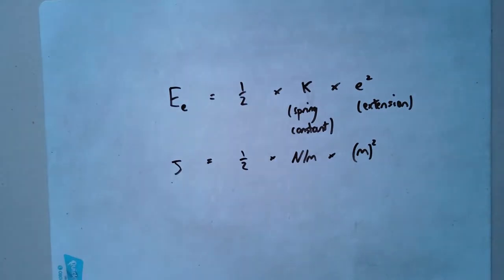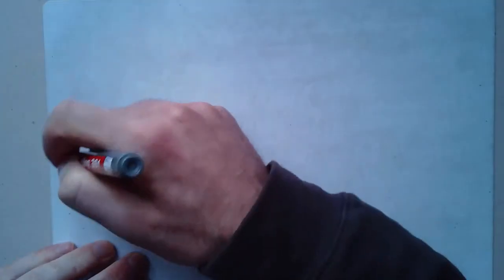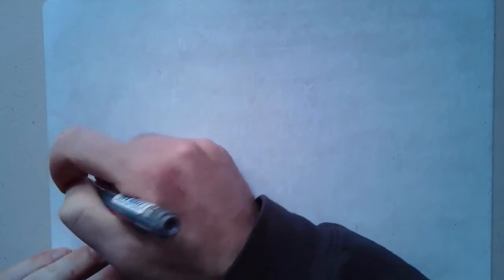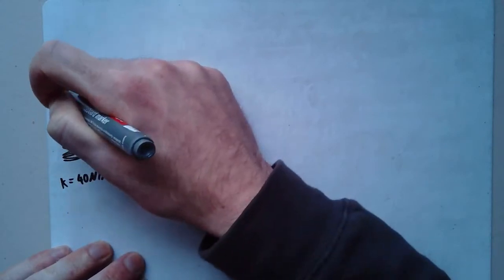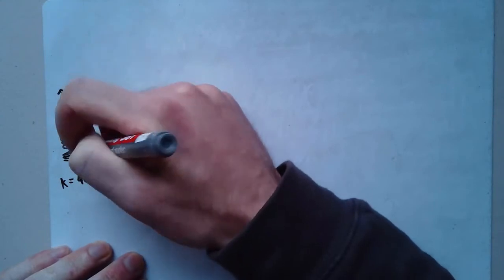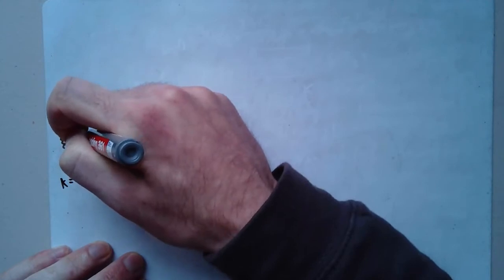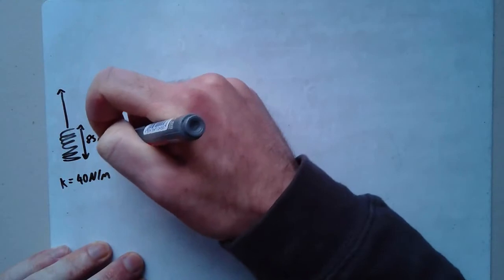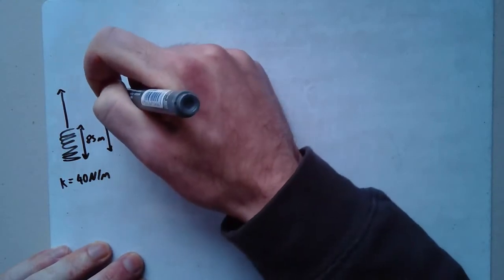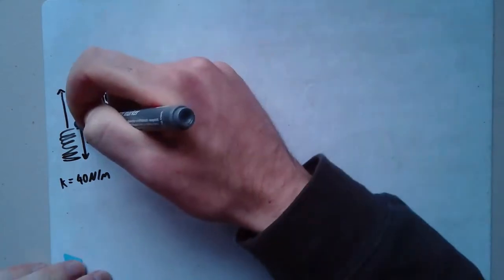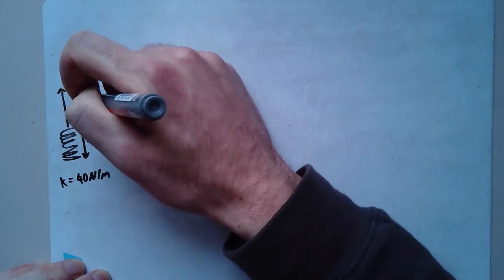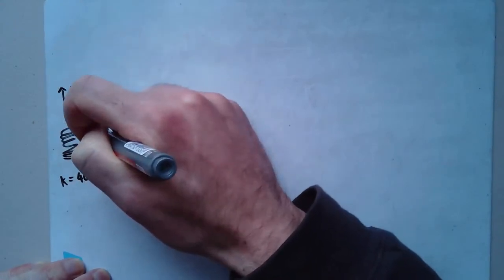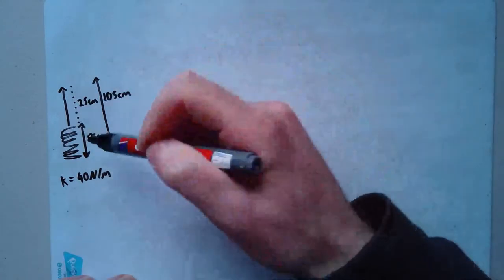Let's do some examples. So let's say I've got a spring. It's got a spring constant of, I don't know, 40 Newtons per meter. I stretch it. And its length to start with is, let's go for 85 centimeter. And its length at the end is 105 centimeter. Its extension is this distance here, which in this case is going to be the difference between 85 and 105. So 25 centimeter. Sorry, this should be, this should say 85 centimeter. 20, so 25 centimeter extension. Going from a length of 85 to a length of 105 means it's extended by 25.